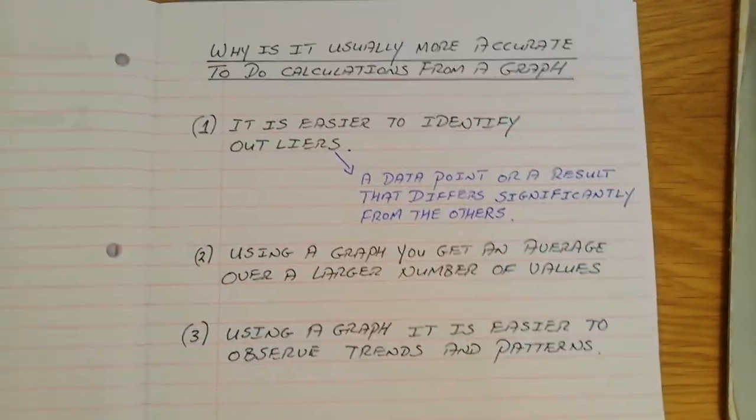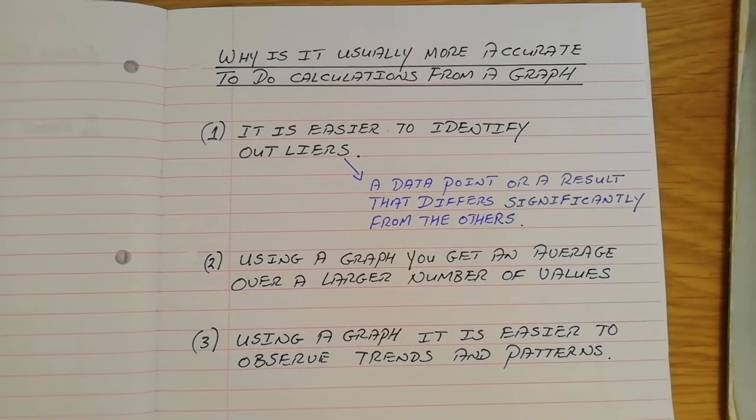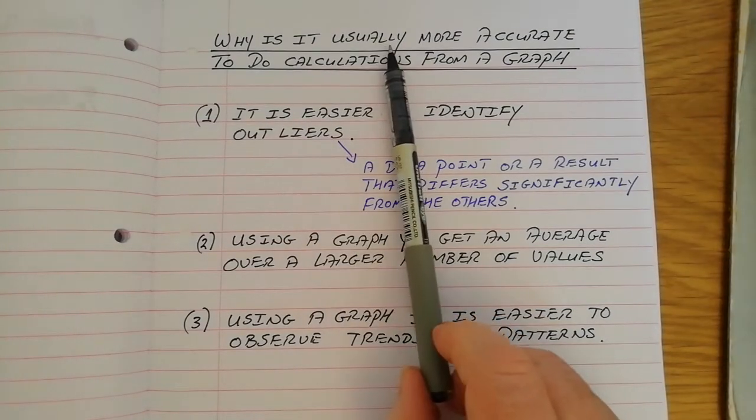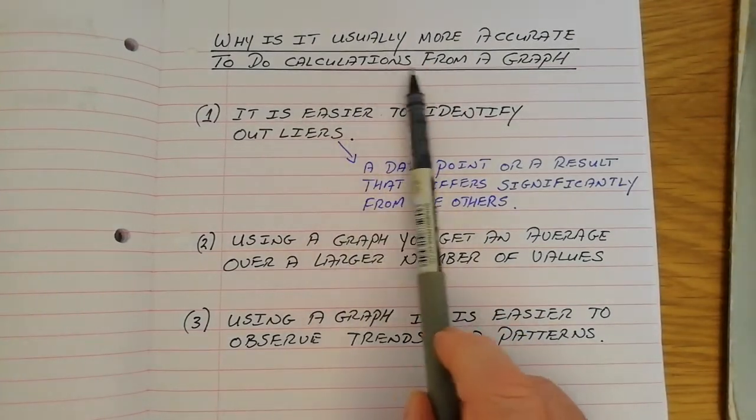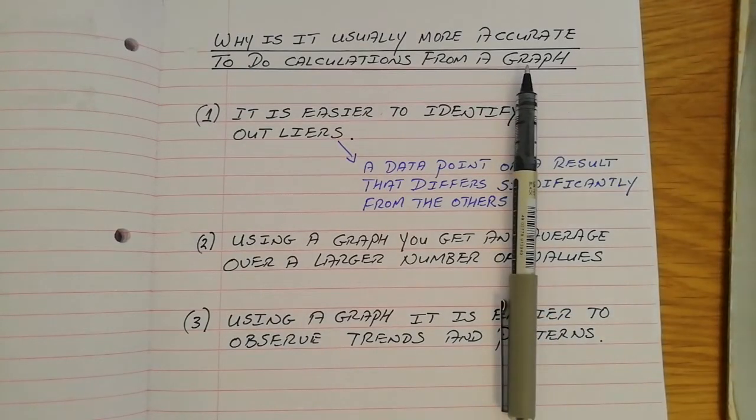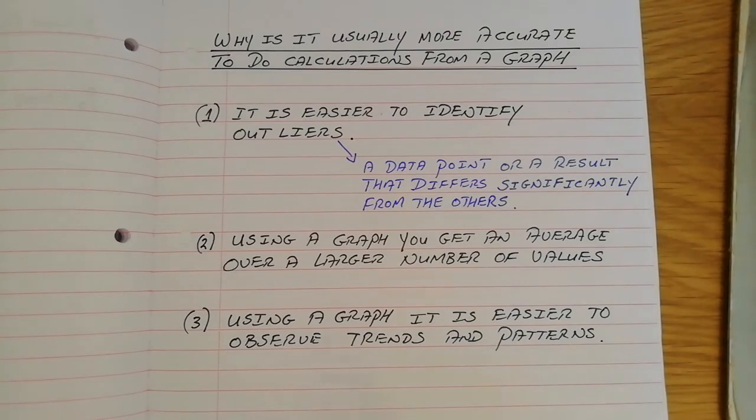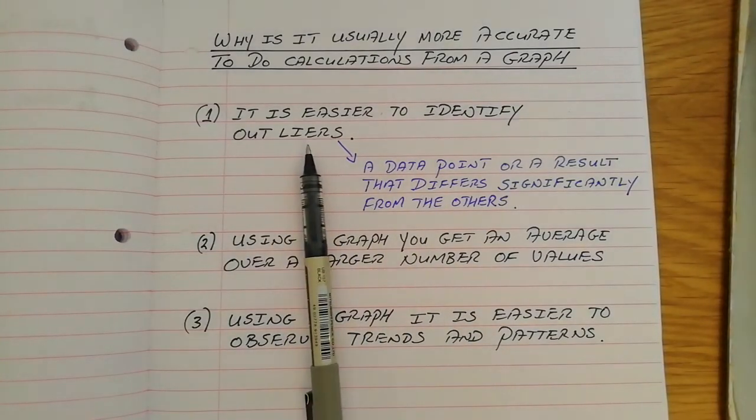Excuse me. Something else that you might be interested in, and I think you could write this into your experiment copy, because it has come up twice in the Leaving Cert in the last 10 years or so. So why is it usually more accurate to do calculations from a graph rather than just doing it from a formula? Well, if you plot a graph, the first thing is it's easier to identify things we call outliers. And outliers are points on the graph that just don't fit in with the trend.